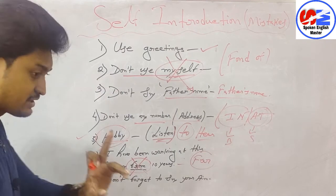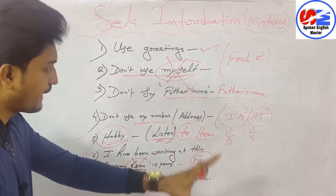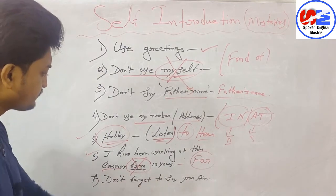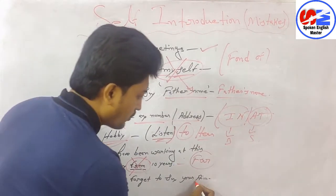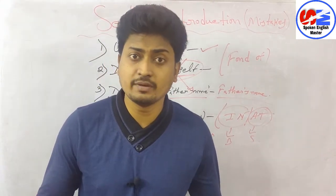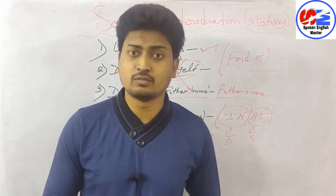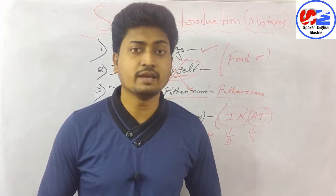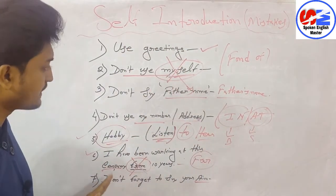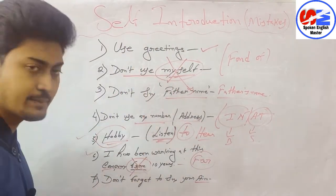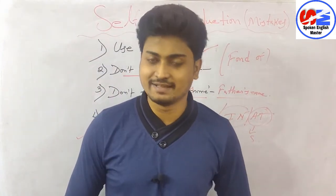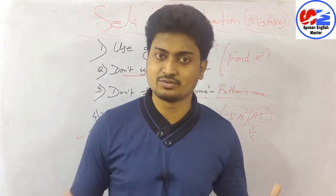The last point — mistake number seven: don't forget to say your aim. Many students don't mention their aim. Aim means what you want to become in the future — you may want to become a businessman, a singer, whatever. You have to say it — it's very important. So these are the 7 points. If you take care of all of them, I can guarantee you will not commit a single mistake and will definitely get the job.